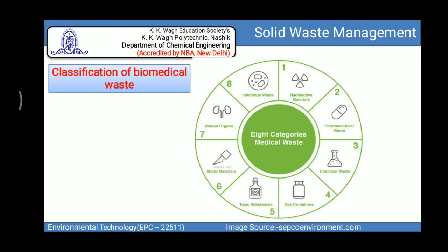The sixth category is sharp material. Sharp material contains needles, syringes, scalpel blades, blood specimens, pasteur pipettes, and broken glass exposed to infectious agents.